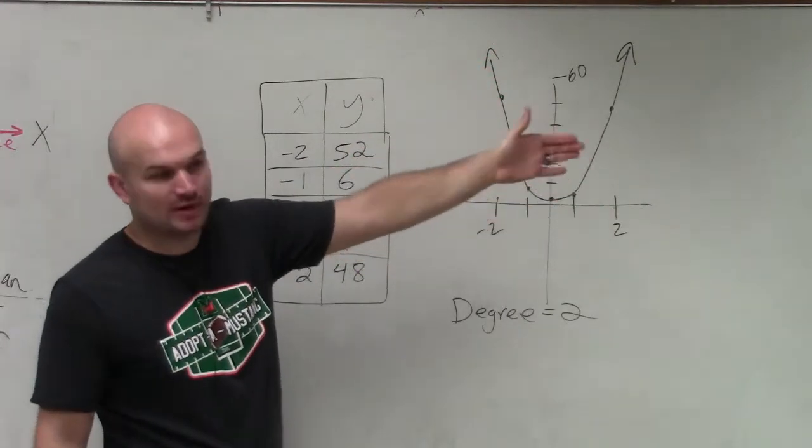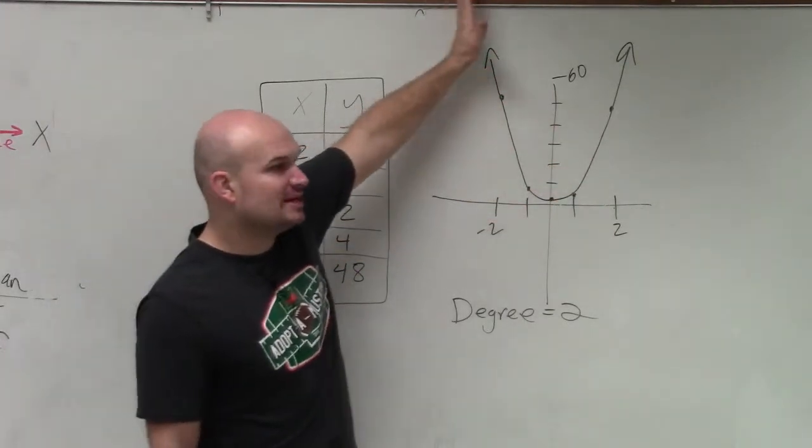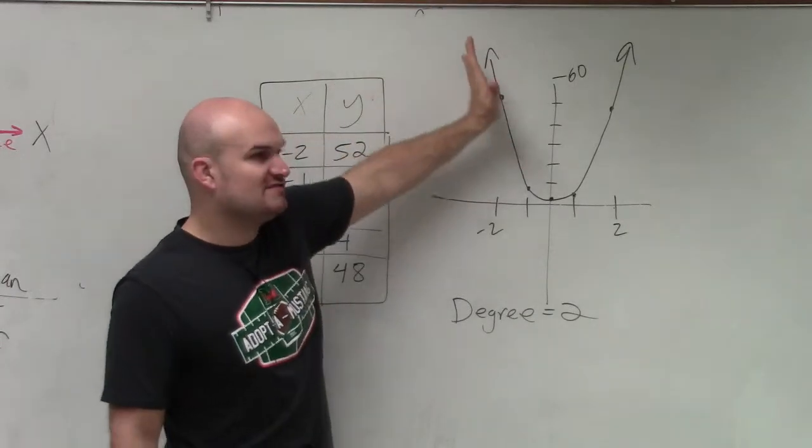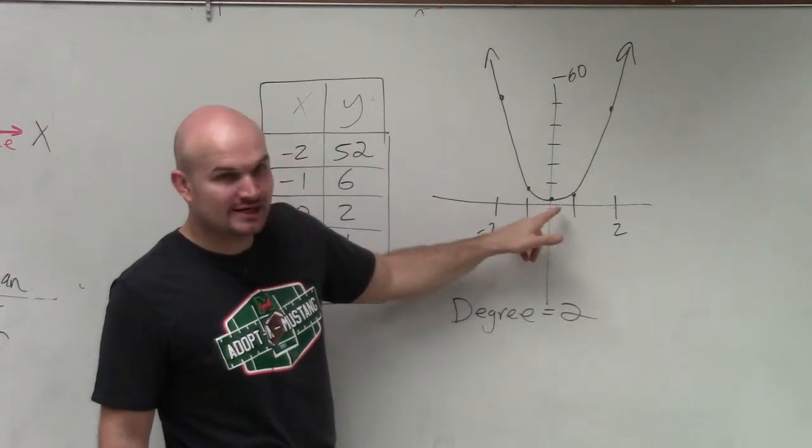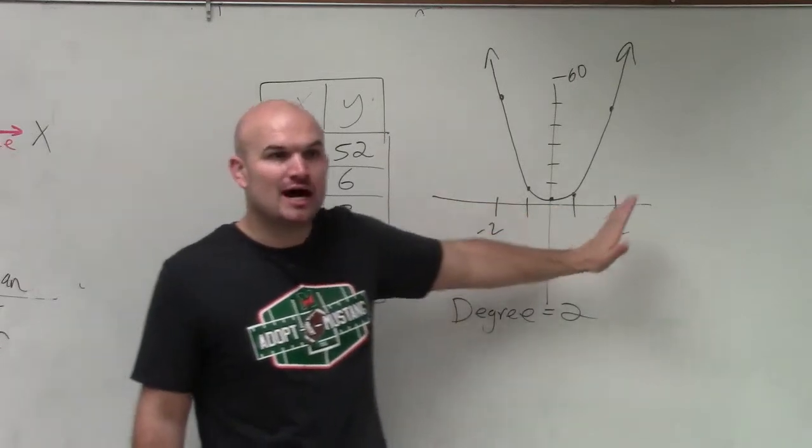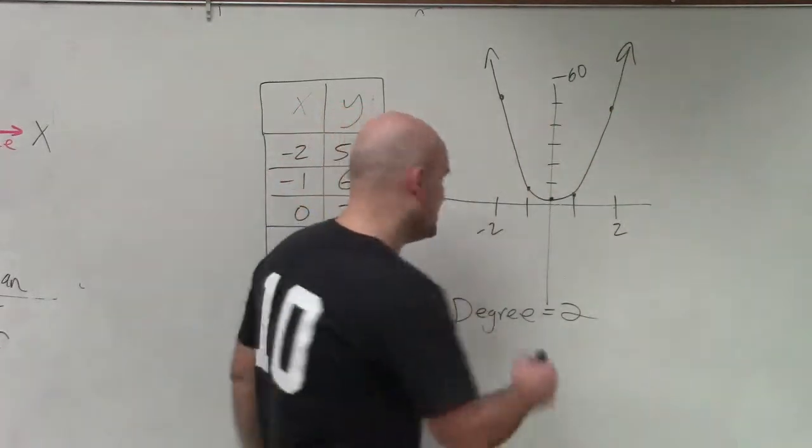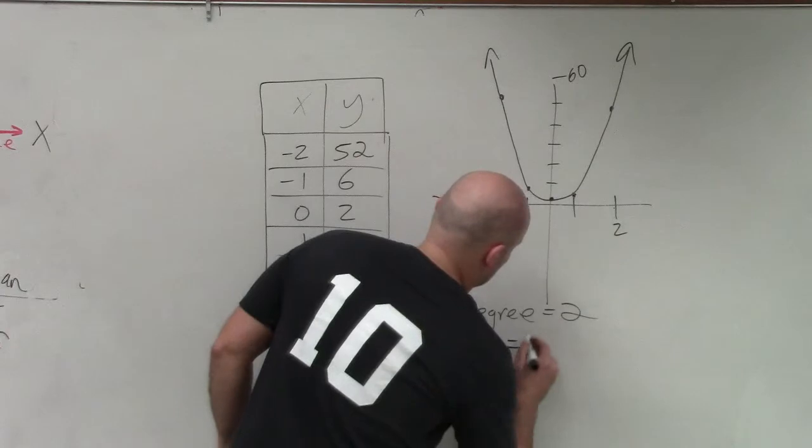But you guys can see that from the left side, the graph is falling, right? But then at this vertex here, it turns to now rising. So the turning point is equal to 1.